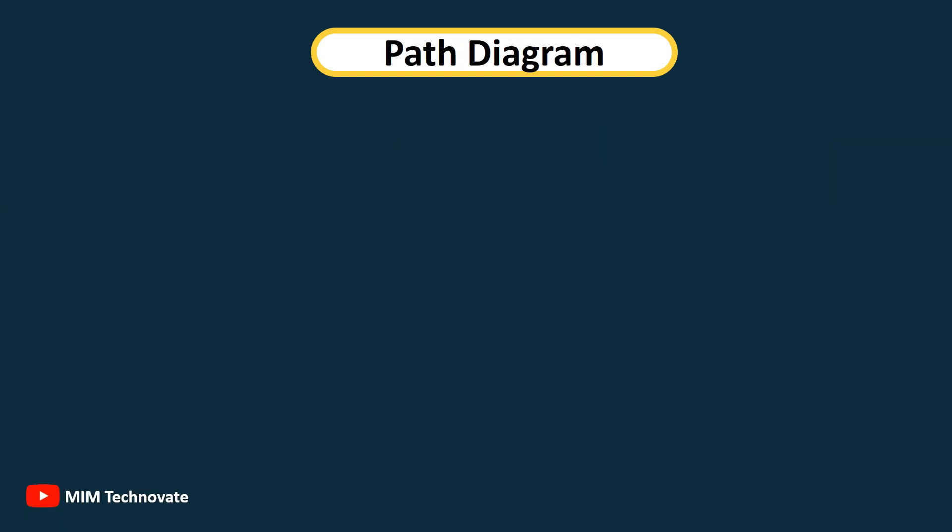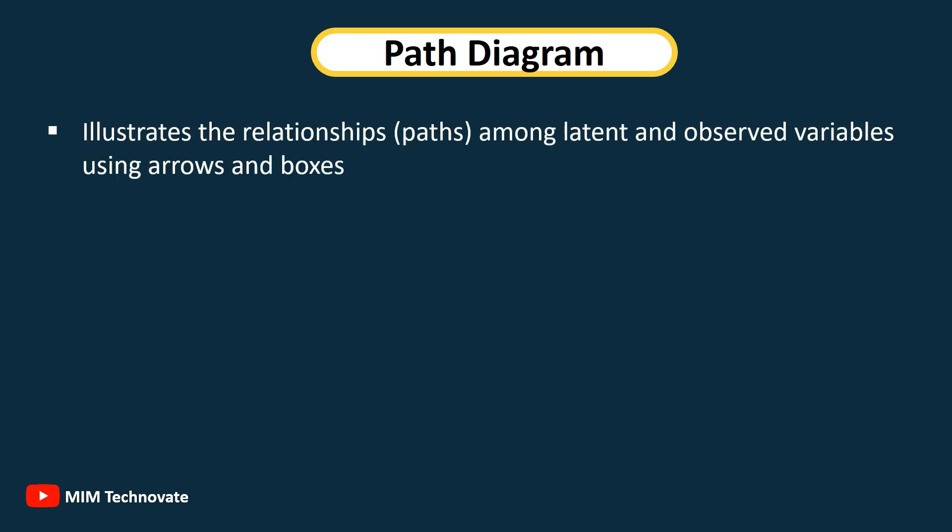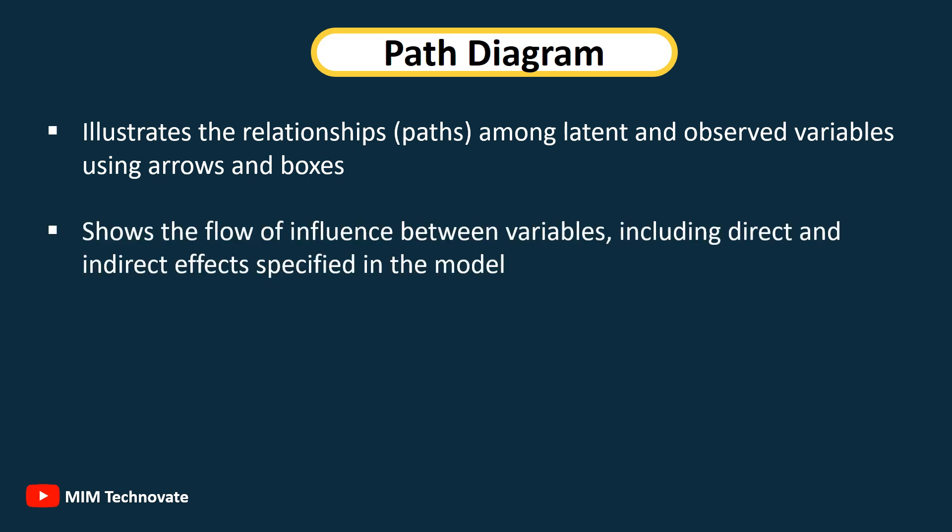Path Diagram: A visual representation of the structural equation model that illustrates the relationship paths among latent and observed variables using arrows and boxes. It shows the flow of influence between variables, including direct and indirect effects specified in the model.